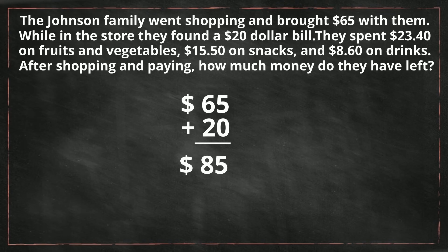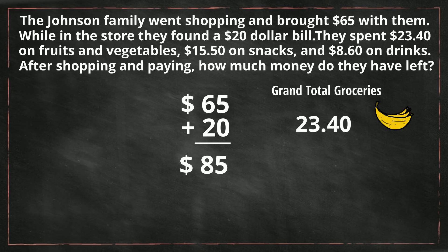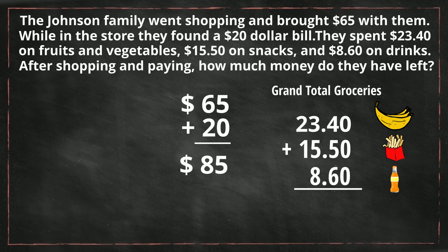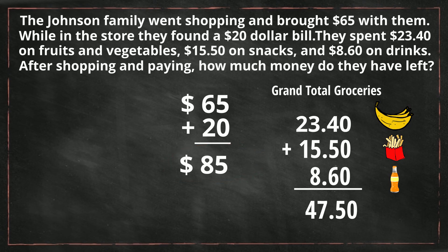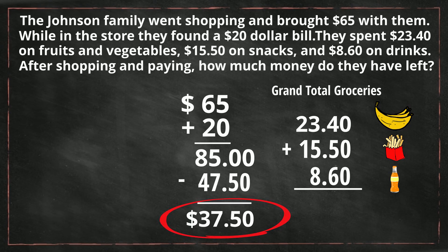Now we need to subtract the amount spent on groceries. Let's get a grand total: $23.40 plus $15.50 plus $8.60. Grand total, they spent $47.50 on groceries. Now let's go back to the total amount of money they had, which was $85.00. Whenever you purchase, you subtract. We subtract the groceries, which was $47.50, and they have $37.50 left over.